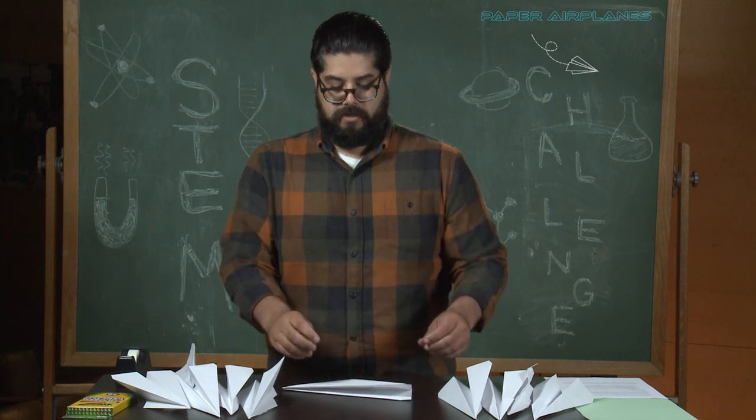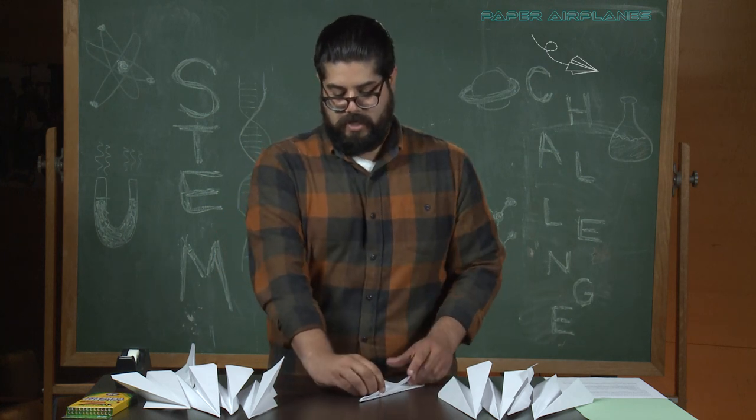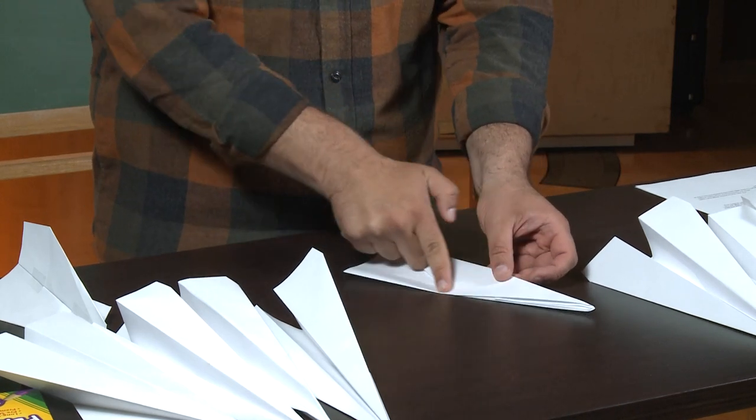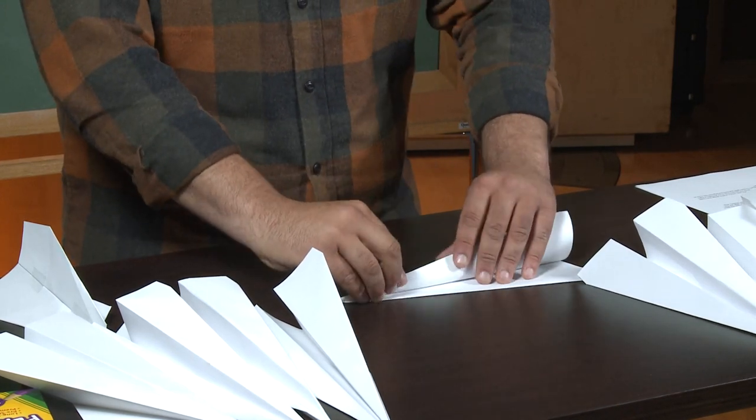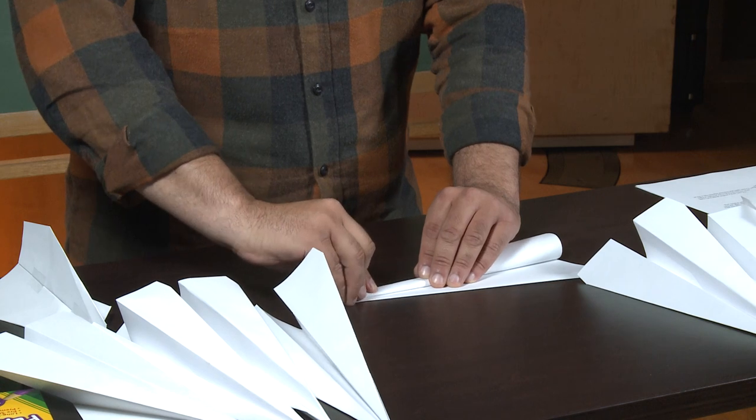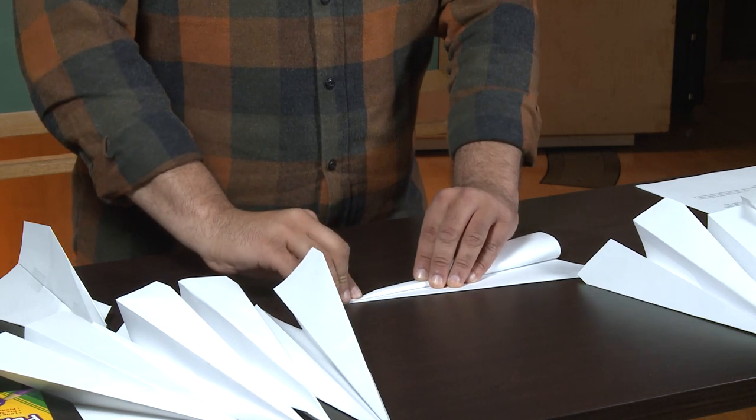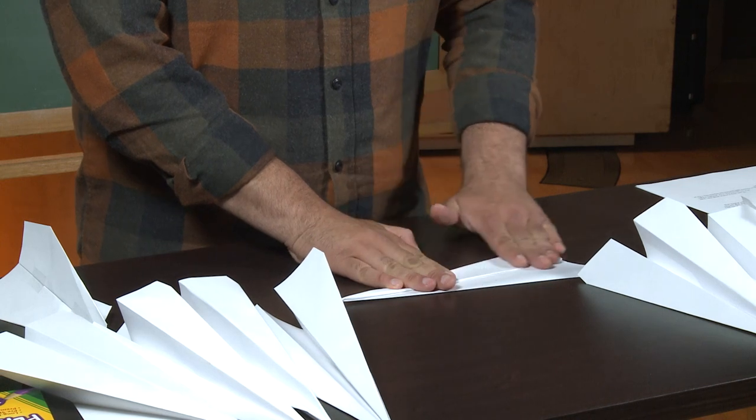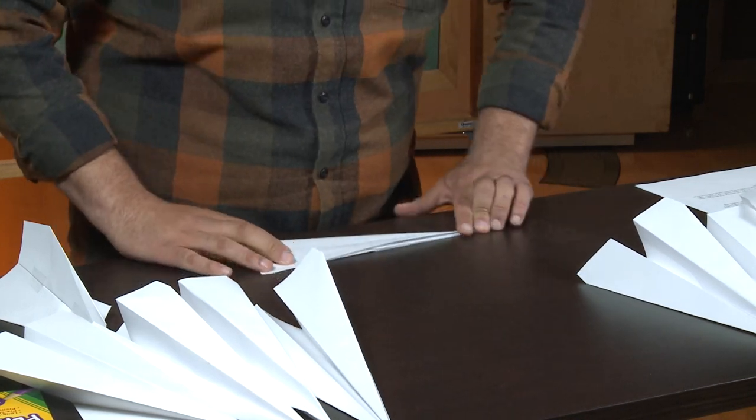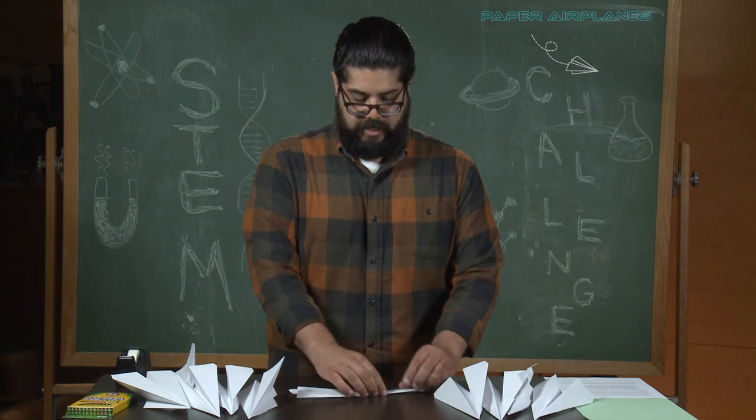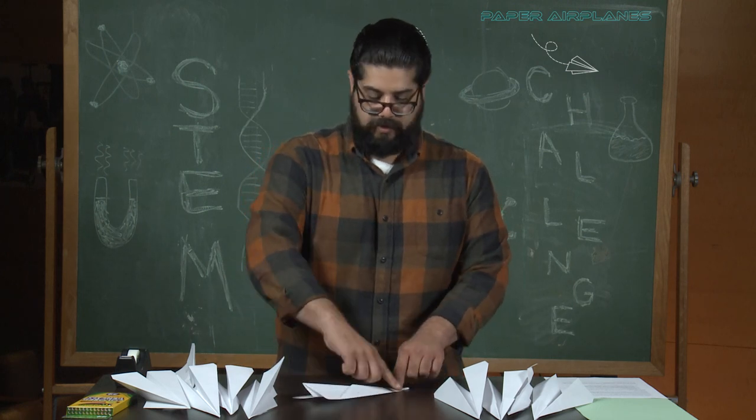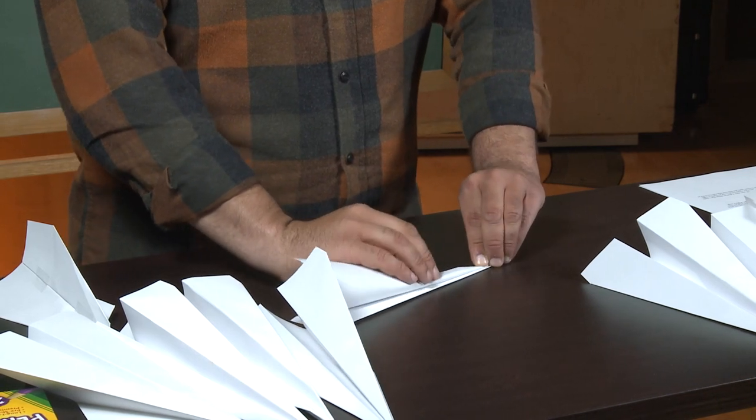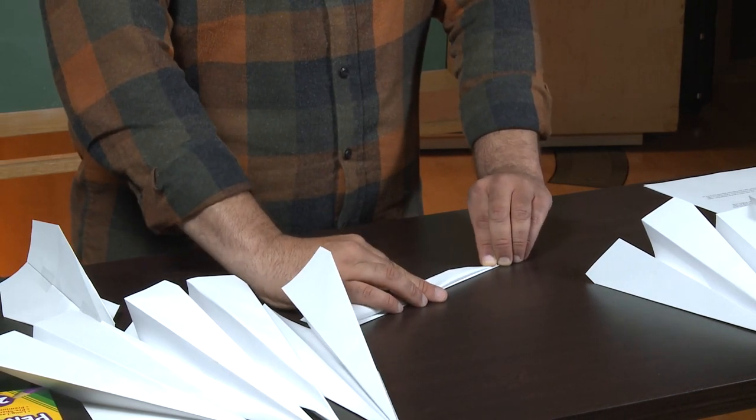So the next thing you are going to take this long side and you're going to line it up against this long side of the paper so that they're lined up and creased against each other. Just like that. And then we're going to flip our paper over and then do the exact same thing. Take that long side, match it up with the long side at the bottom.